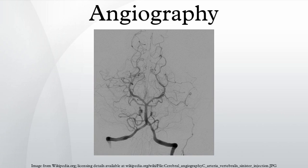Coronary angiography: one of the most common angiograms performed is to visualize the blood in the coronary arteries. A long, thin, flexible tube called a catheter is used to administer the X-ray contrast agent at the desired area to be visualized. The catheter is threaded into an artery in the forearm, and the tip is advanced through the arterial system into the major coronary artery. X-ray images of the transient radiocontrast distribution within the blood flowing inside the coronary arteries allows visualization of the size of the artery openings.